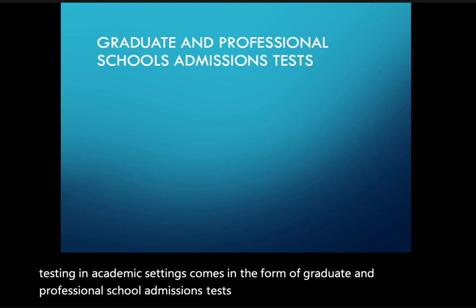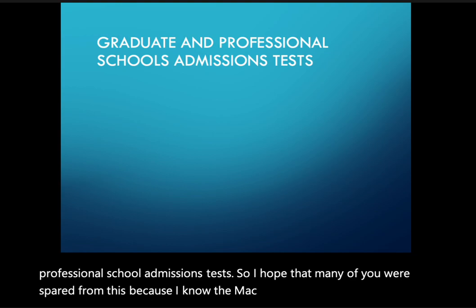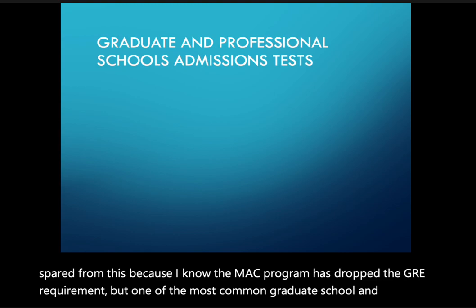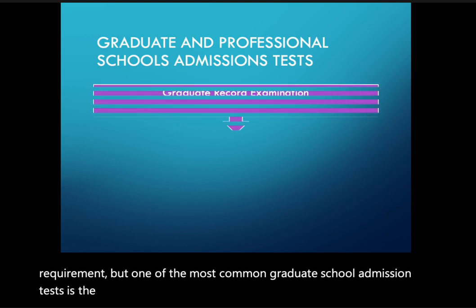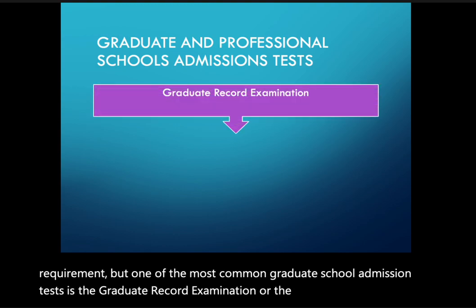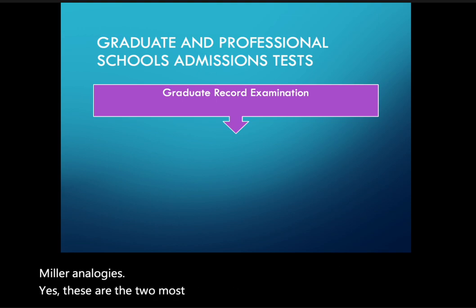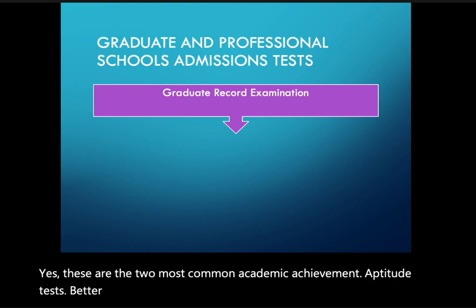I hope that many of you were spared from this because the MAC program has dropped the GRE requirement, but one of the most common graduate school admission tests is the Graduate Record Examination or the GRE, and the second is the Miller Analogies Test. These are the two most common academic achievement and aptitude tests used to determine admission into graduate and professional schools.